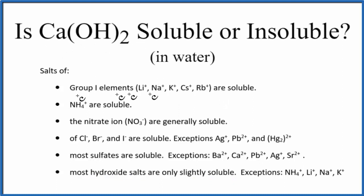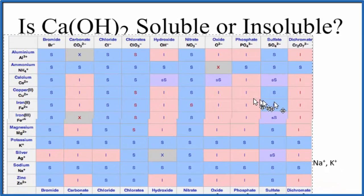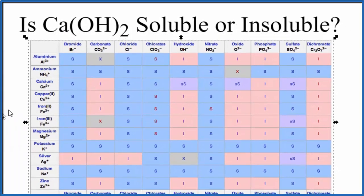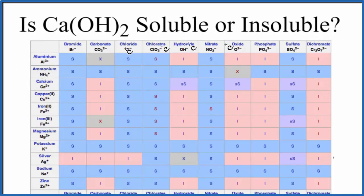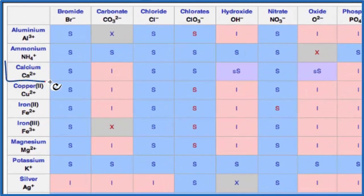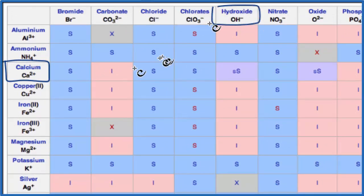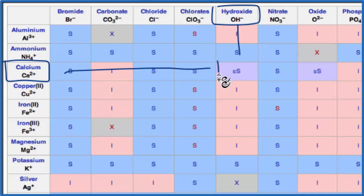There's another way we could figure that out, and that's to look at a solubility chart. The positive ions are on the left, and the anions are on top. We go down to calcium, Ca2+, and look for the hydroxide group. Going over and down, the 'SS' means that it's slightly soluble.